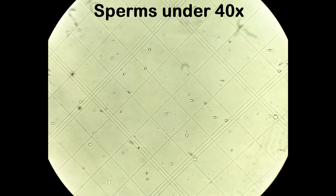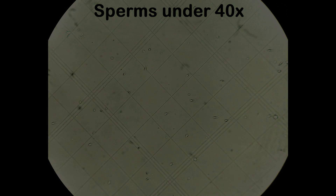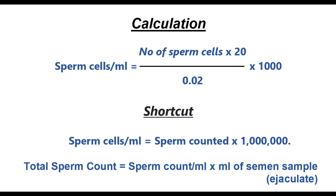Take at least two readings for both counting grids and take the average of the readings. Calculate the sperm count per ml using the formula: sperm cells per ml equals number of sperm cells × 20 × 1000 / 0.02, or in short, sperm cells per ml equals sperm counted × 1 million. Total sperm count equals sperm count per ml multiplied by ml of semen sample or ejaculate. This formula is used when counting is done in the five small squares of the central large square, with the WBC pipette having a 1:20 dilution mark.